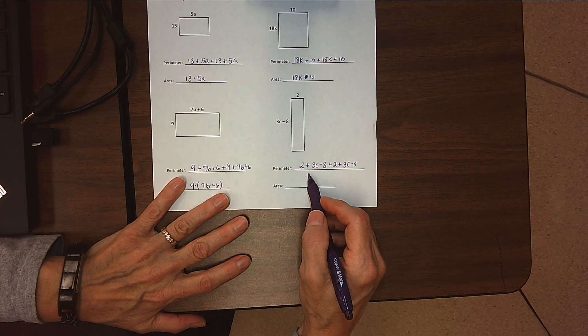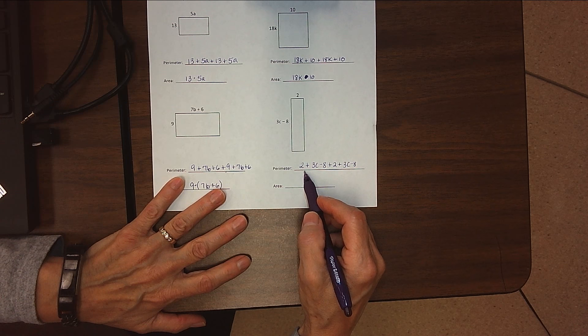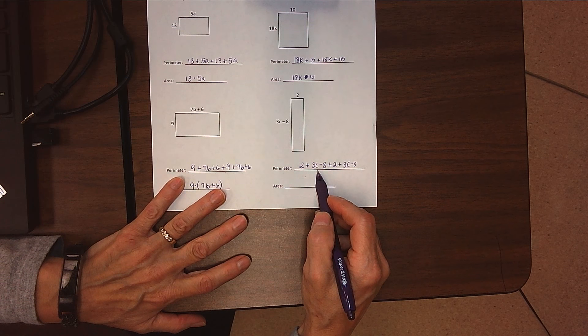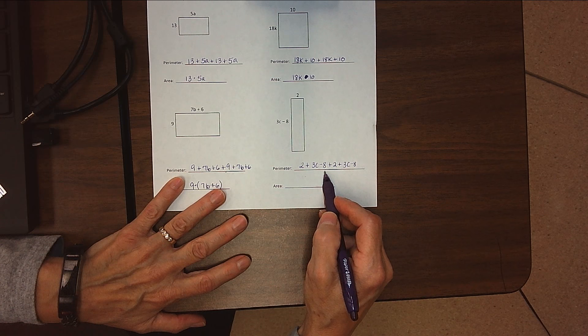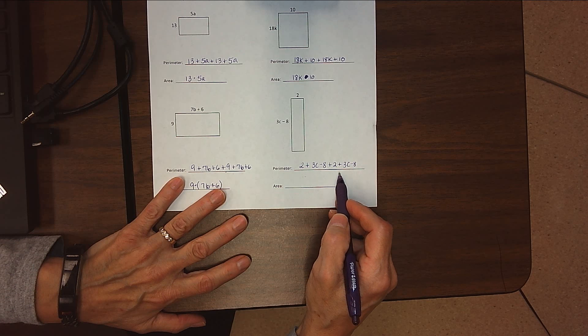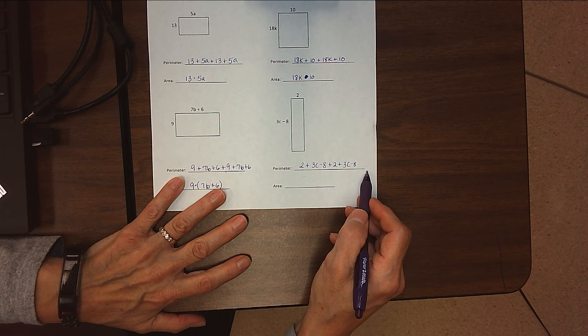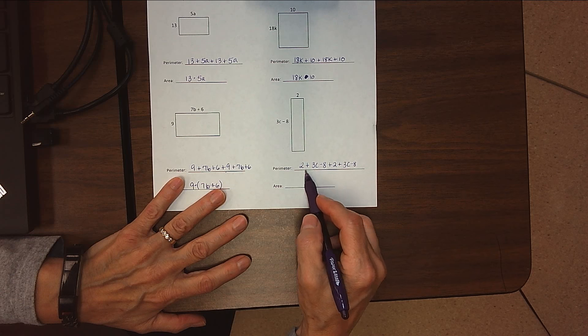The order can change a little bit. You might have started with the 3c minus 8 and then added the 2, then 3c minus 8, then another 2. Or maybe you started with 2 and added 2. It doesn't matter which order you did these, just so that you have all of the terms in there.